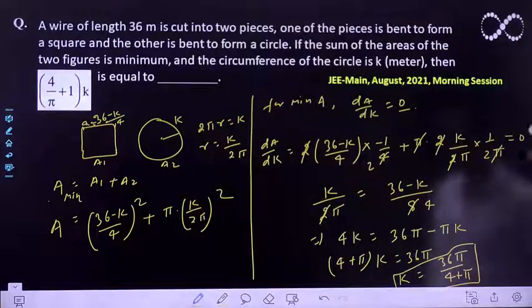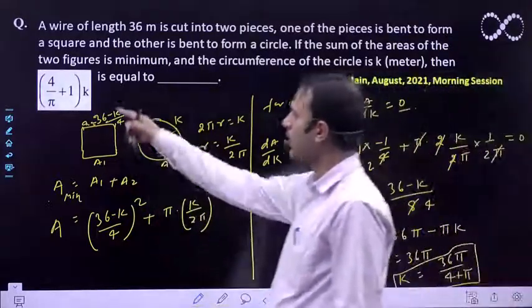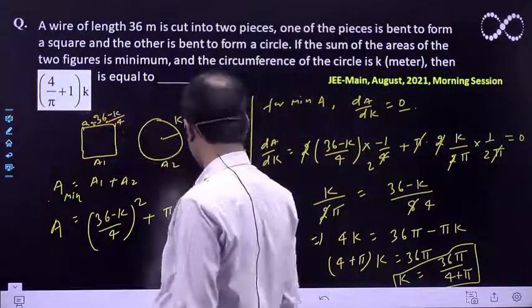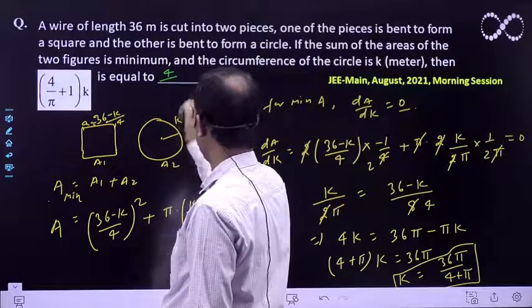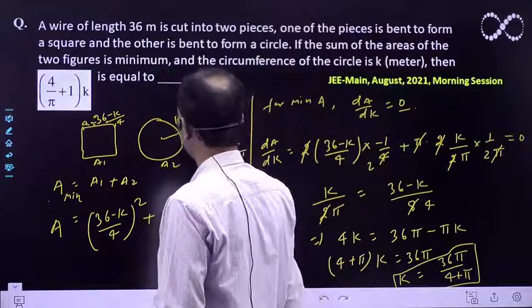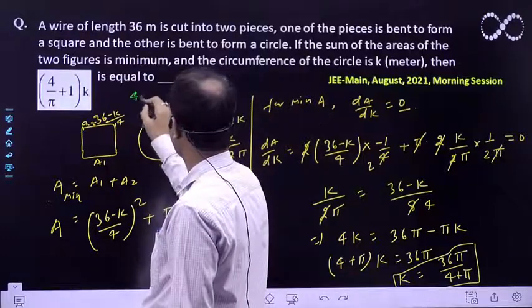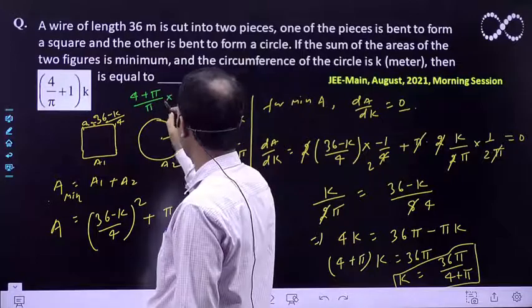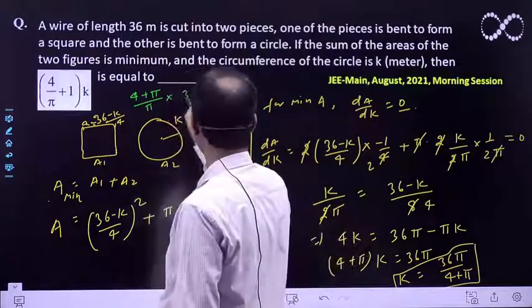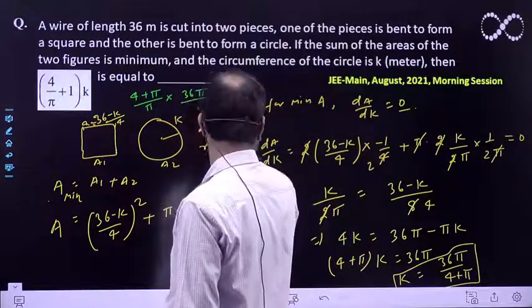Now we have the product (4/π + 1)*k. This means (4+π)/π times k, and k value is 36π/(4+π).